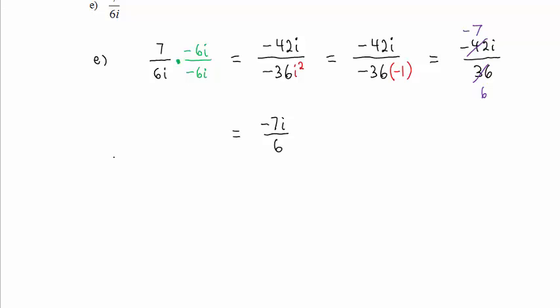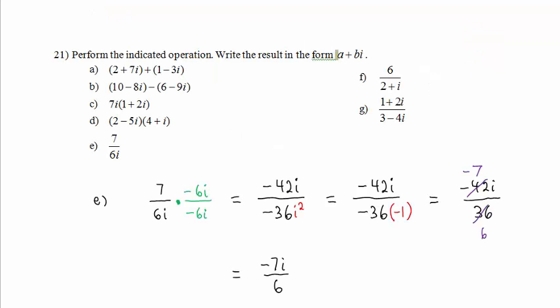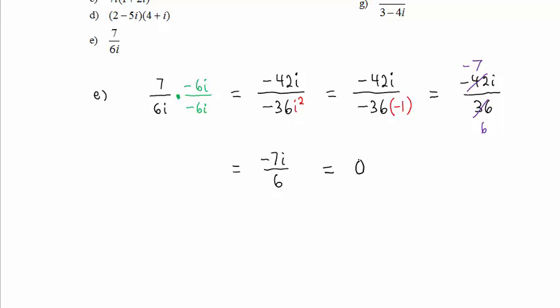If we were to be picky and technical, and write the answer in a plus bi form, we would write 0 minus 7 sixths i.